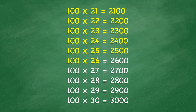100 times 26 equals 2,600. 100 times 27 equals 2,700. 100 times 28 equals 2,800. 100 times 29 equals 2,900. 100 times 30 equals 3,000.